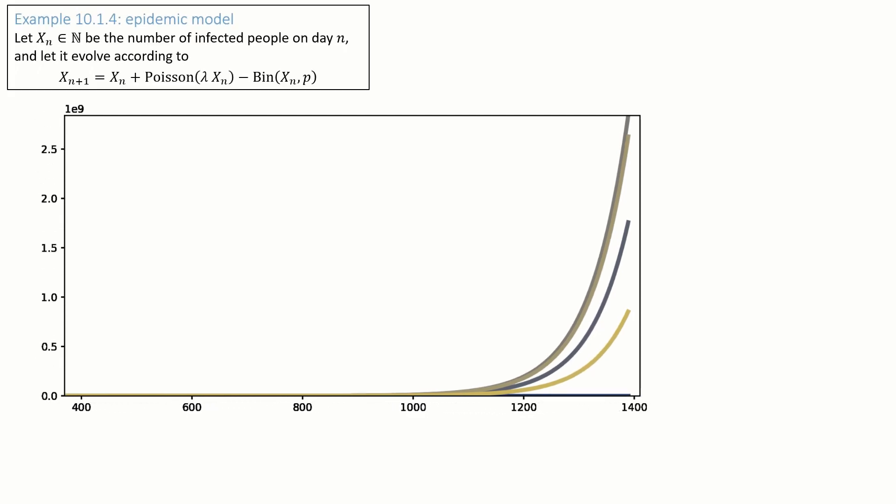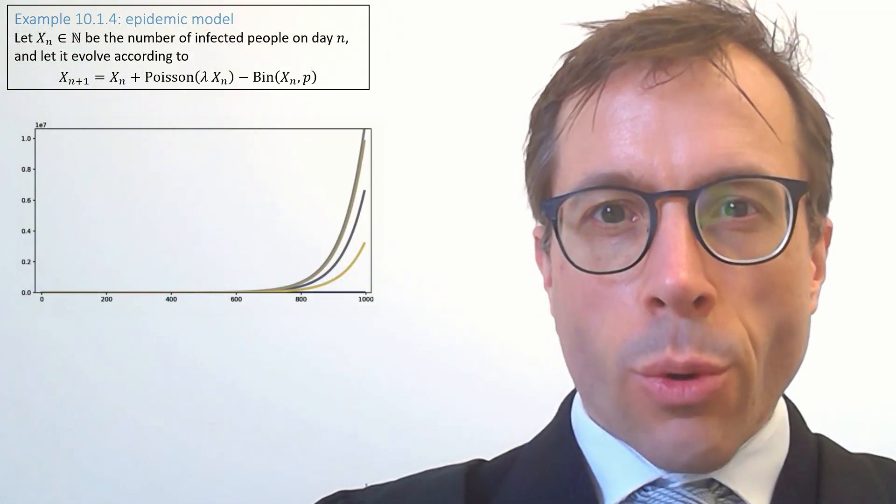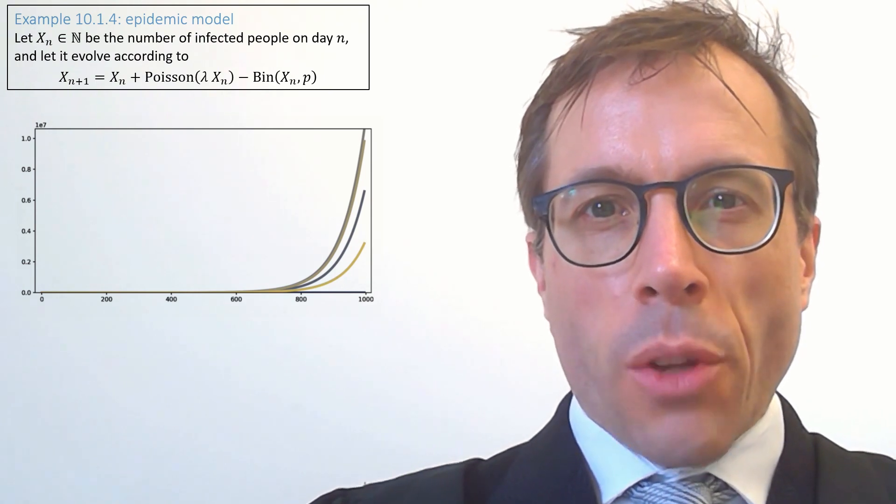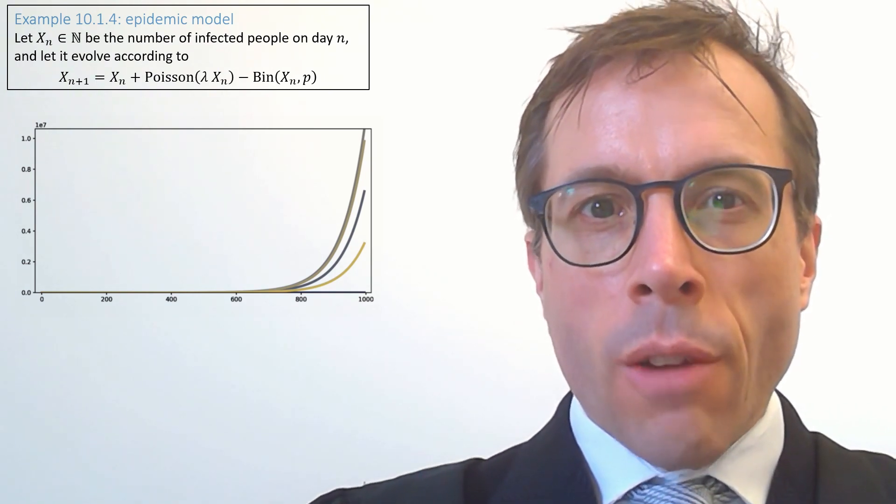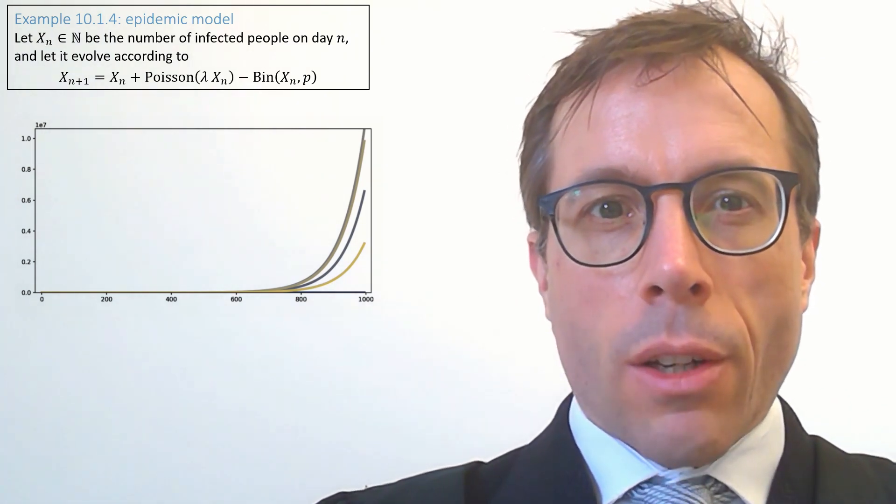What I think is really fascinating here is that we have this transition between two types of behaviour. At the beginning it's all random fluctuations, and at the end it's almost perfectly deterministic, an exponential curve for four of the runs. In one of the runs the epidemic died out completely.